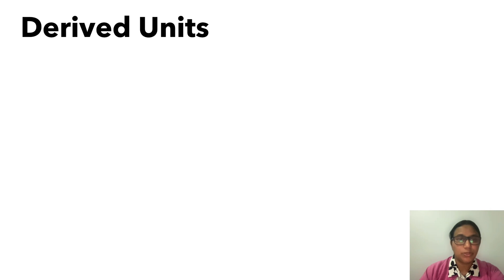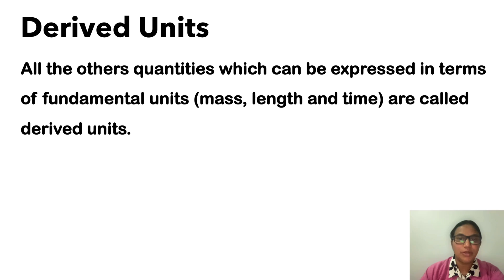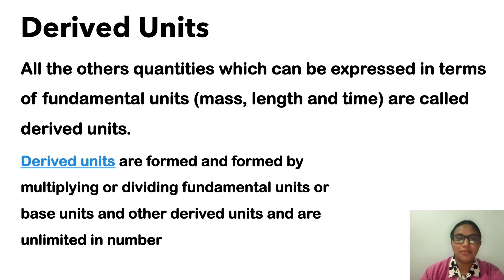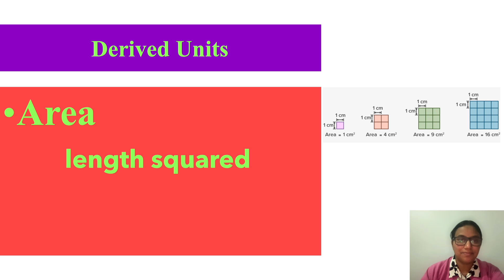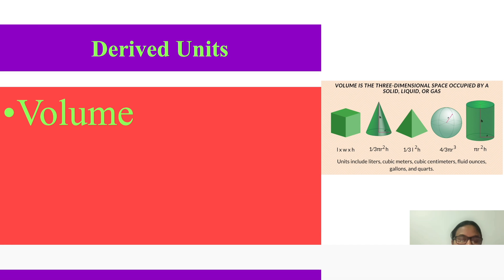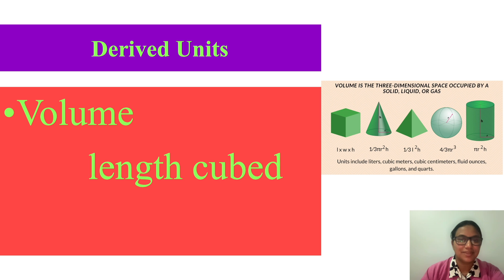What are derived quantities? All other physical quantities which can be expressed using the seven fundamental units are called derived units. Derived units are formed by multiplying or dividing fundamental base units. For example, area is length squared, which gives us meter squared. Volume is length cubed, giving us meter cubed.